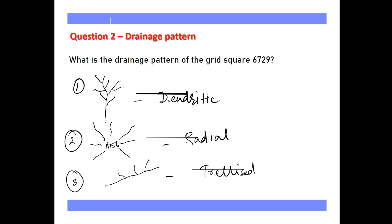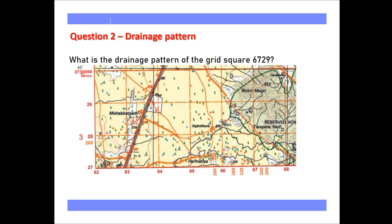These are the three main drainage patterns we need to remember. The question is: what is the drainage pattern of the grid square 6729? So 67 is here and 29 is here, and they are intersecting at this point — so the grid is this grid. Here, the streams are merging and circulating at a point, so the answer will be radial drainage pattern.